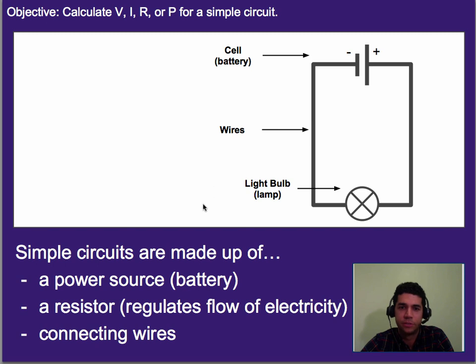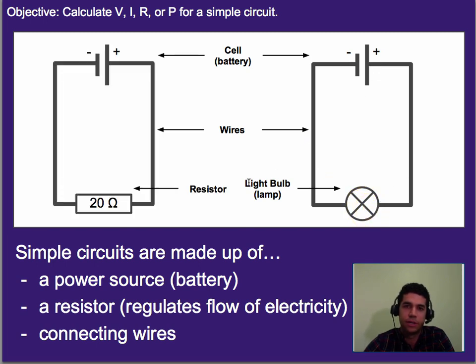Okay, a little bit of review first. We've introduced this idea of a schematic, and here we have a schematic drawing of a battery, a light bulb, and then the connecting wires. A simple circuit is usually made with a resistor.